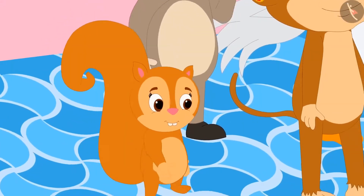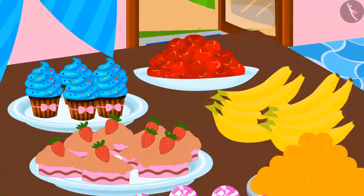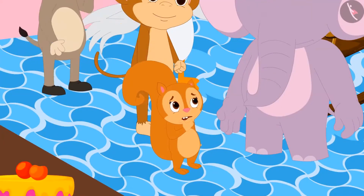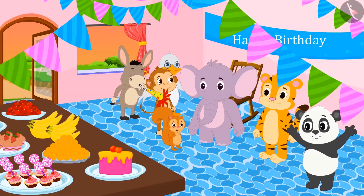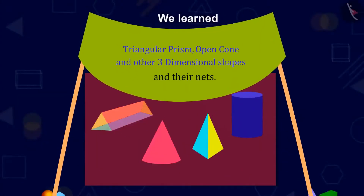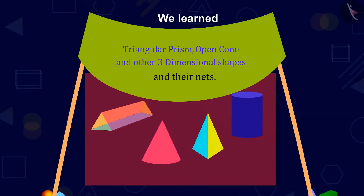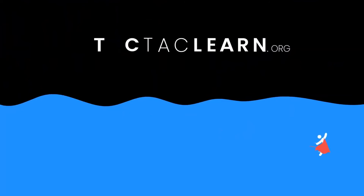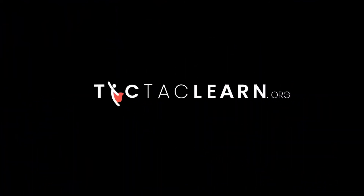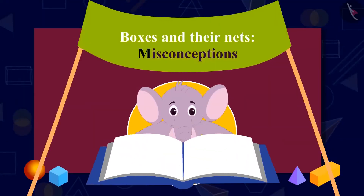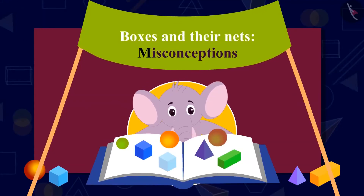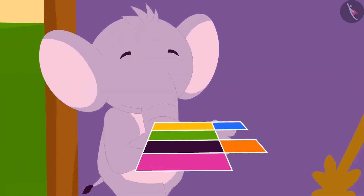Chanda is now roaming around in the party, looking at other shapes and thinking about how to make the shapes of their nets. You should also look at the shapes of objects around you and try to make the shape of their net. Kids, in this lesson, we have learned about the triangular prism, open cone, and other three-dimensional shapes and their nets. Till now we have learned about boxes and their nets. In this video, we will learn about some of the misconceptions related to it. Appu suddenly came to Babu uncle's house today, with a cardboard cutout in his hand.